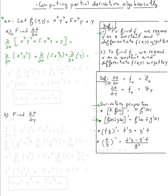Next, we use the constant multiple rule: if you have a constant times a function, you can pull the constant out. Since we're taking the partial with respect to x, y⁷ is considered a constant, so we take it out. This gives y⁷ times the partial of x² with respect to x. Similarly, y is a constant for the second term. The last term, partial of y with respect to x, is zero because y is a constant and the derivative of a constant is zero.